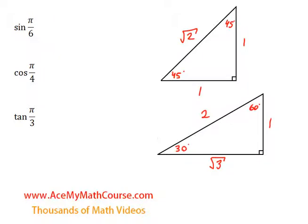Okay, now let's calculate trig ratios using the special right triangles, which are these two right here, the 30-60-90 and the 45-45-90.